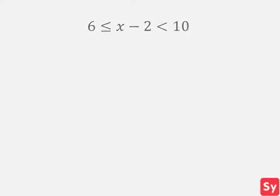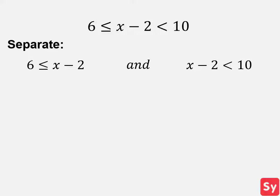Let's see some examples. For the first example, we have 6 is less than or equal to X minus 2, which is less than 10. First we separate the compound inequality into two inequalities: 6 is less than or equal to X minus 2, and X minus 2 is less than 10.